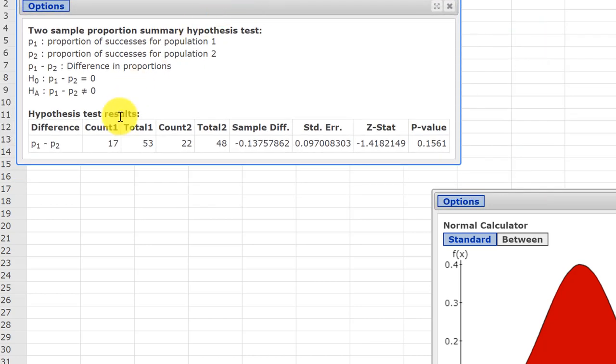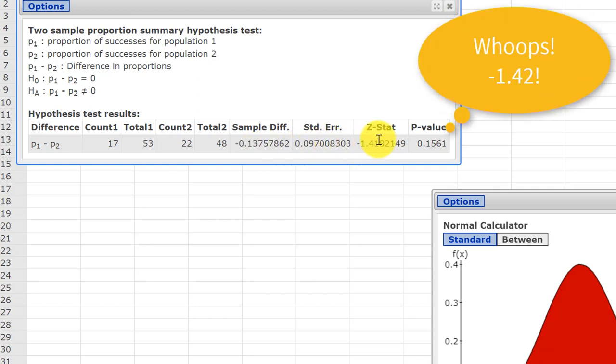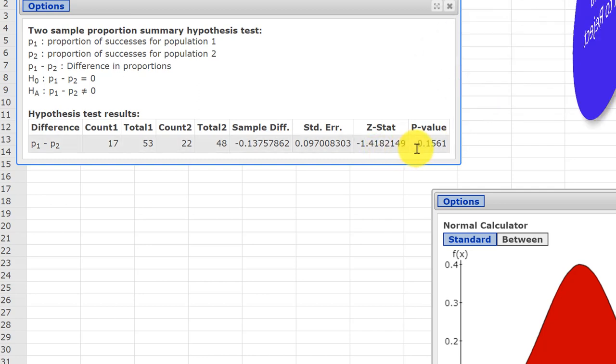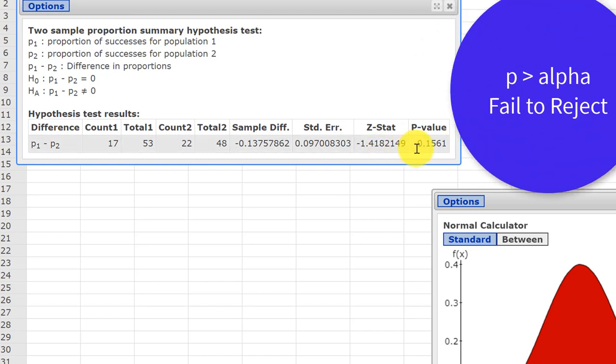We've got a rehash there of the counts, successes, and totals. The test statistic, and then the standardized test statistic over here, 1.42 rounded, and a p-value of 0.15, which is bigger than the alpha of 0.07, which means we fail to reject the null hypothesis.